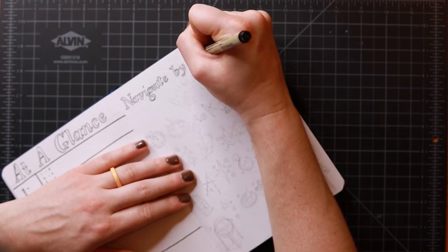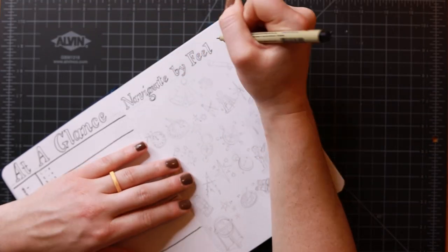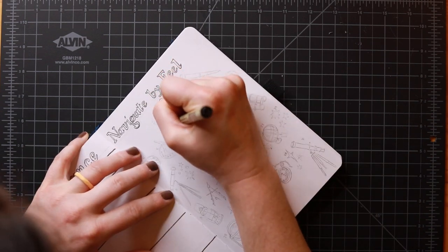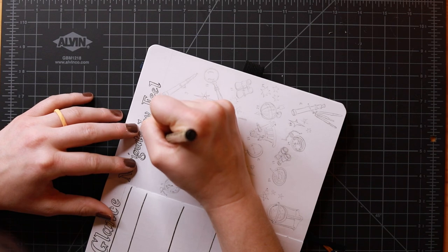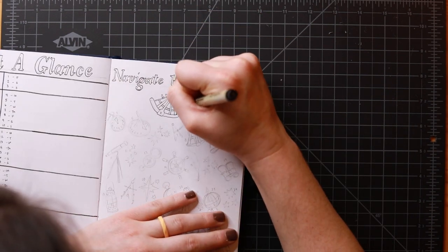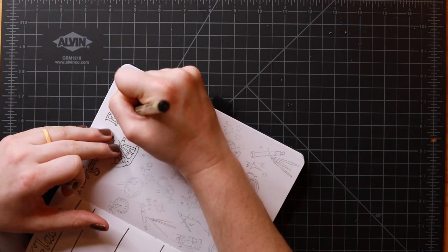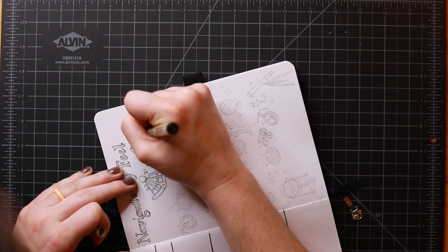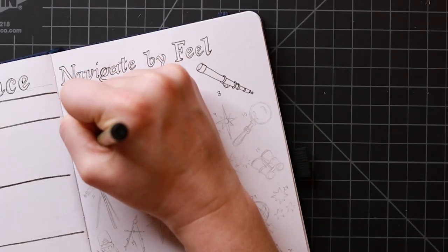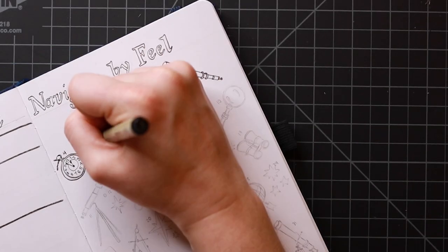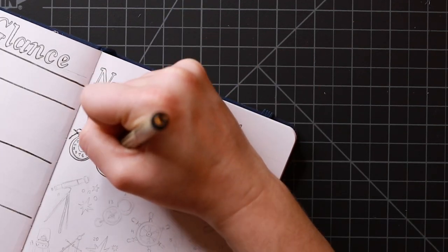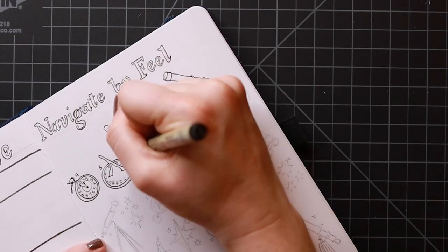And then the next thing is I'm setting up my mood tracker. So my mood tracker, I'm calling it navigate by feel. I couldn't come up with a super punny header for it this month. I tend to do super cute punny headers for my mood tracker. One month I did a hedgehog theme and I said, feeling on hedge. Oh yeah, lame. But anyways, navigation, navigate by feel.